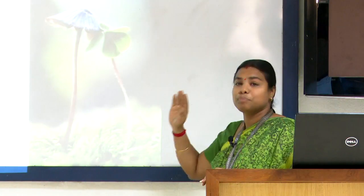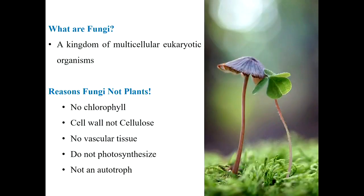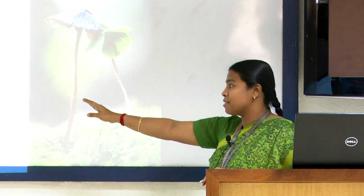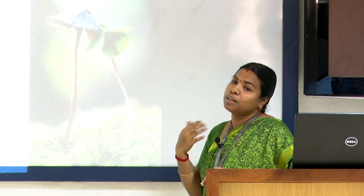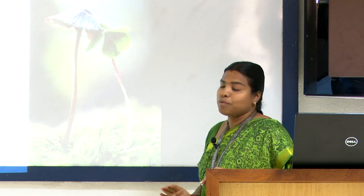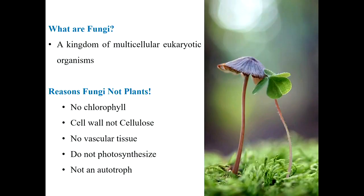Why are fungi not kept under the plant kingdom? Fungi do not contain chlorophyll; their cell wall is not made up of cellulose but chitin; no vascular tissues (xylem and phloem) are reported in fungi; they do not photosynthesize. They cannot synthesize their own food — they are saprophytic decomposers and heterotrophs. That is why fungi are kept as a separate kingdom.